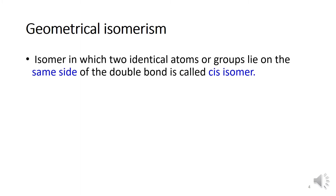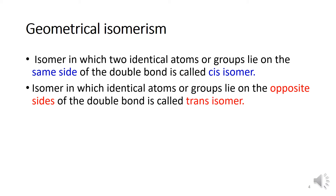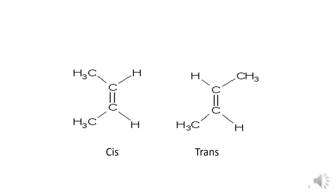Geometrical isomerism is the isomerism which arises due to the difference in the spatial arrangement of atoms or groups about a doubly bonded carbon atom. If the two atoms or groups bonded to each end of the carbon-to-carbon double bond are in the same direction or on the same side, it is called the cis isomer. If the two identical or similar groups are lying on opposite sides of the compound, it is called the trans isomer.